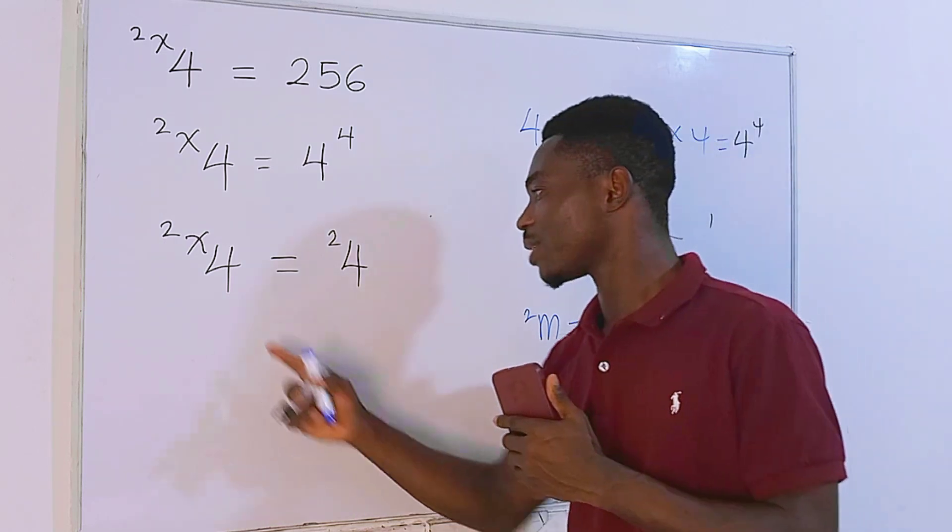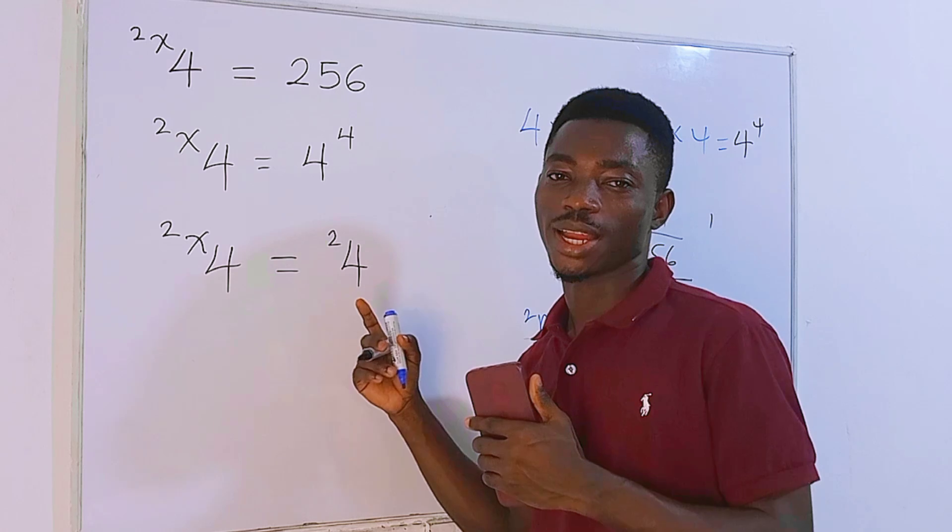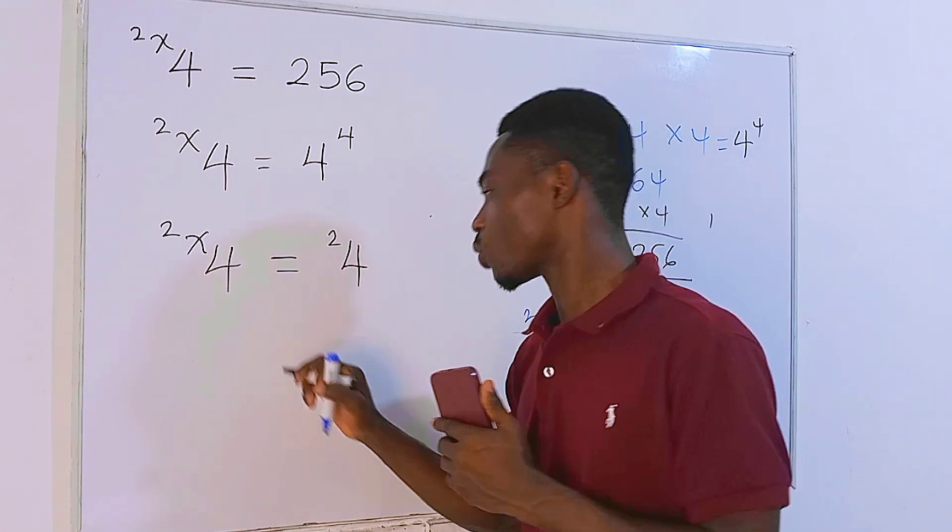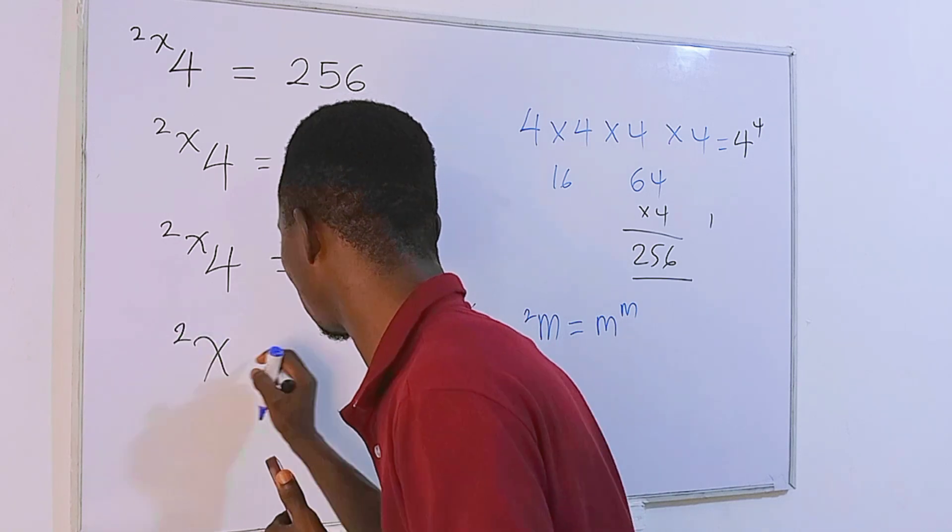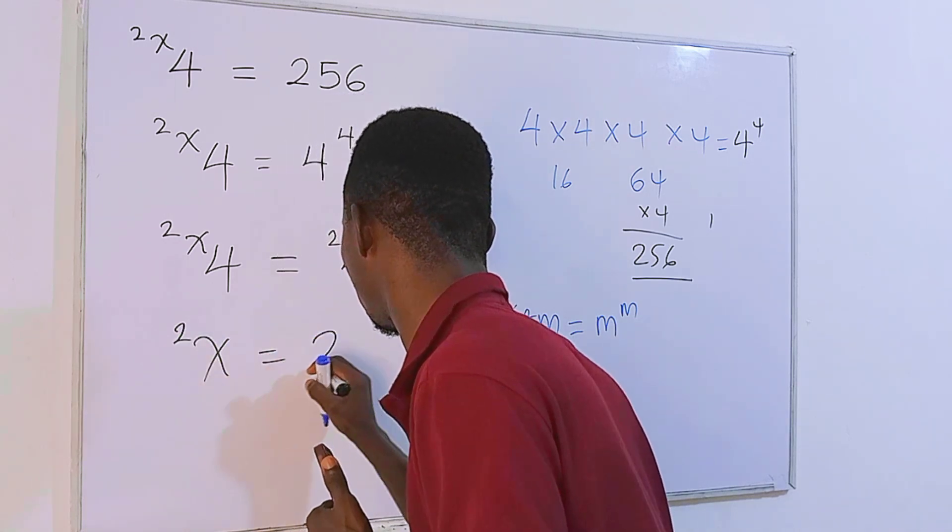Now check this. This time around, the bases are the same. Of course, we can now equate their powers. So we are going to have x tetrated to 2 equals 2.